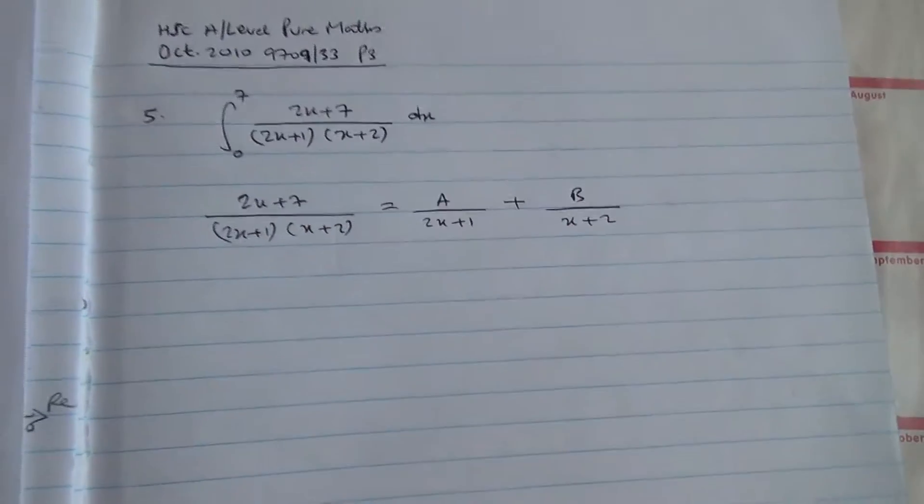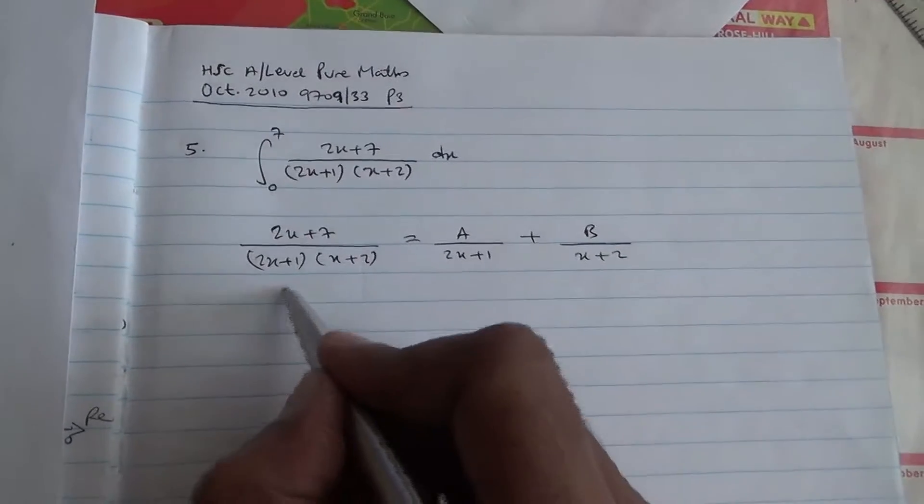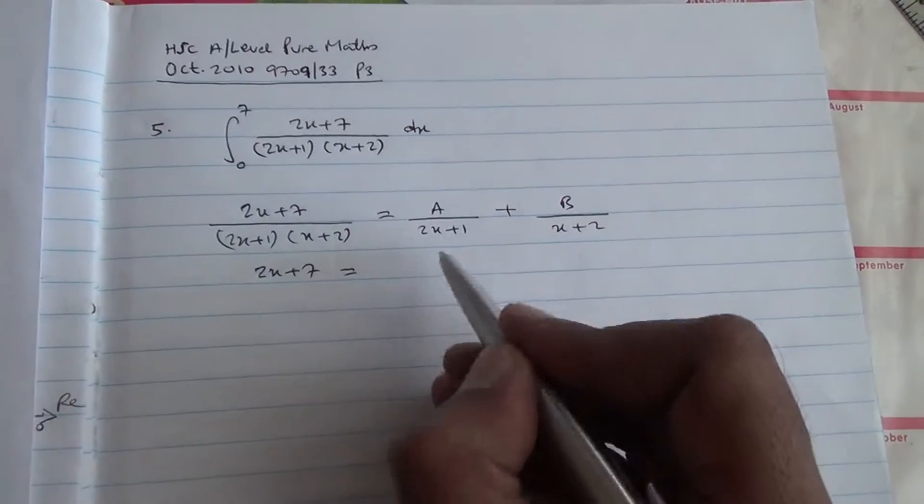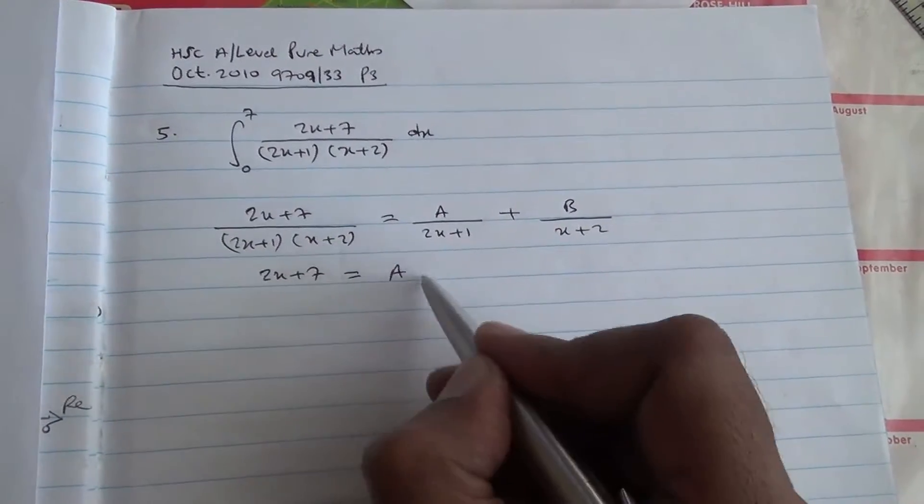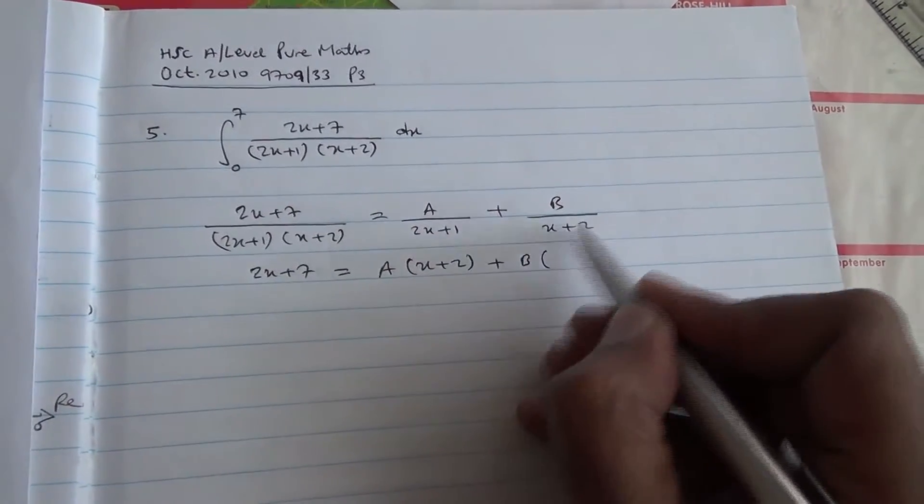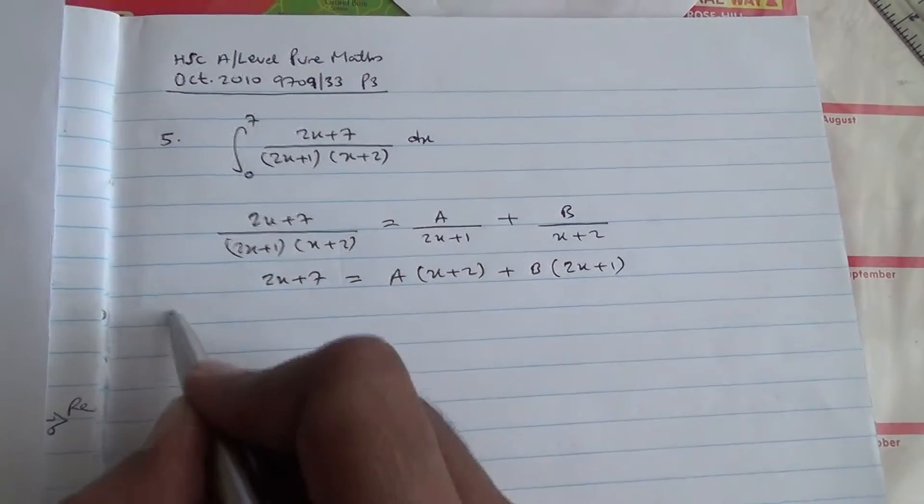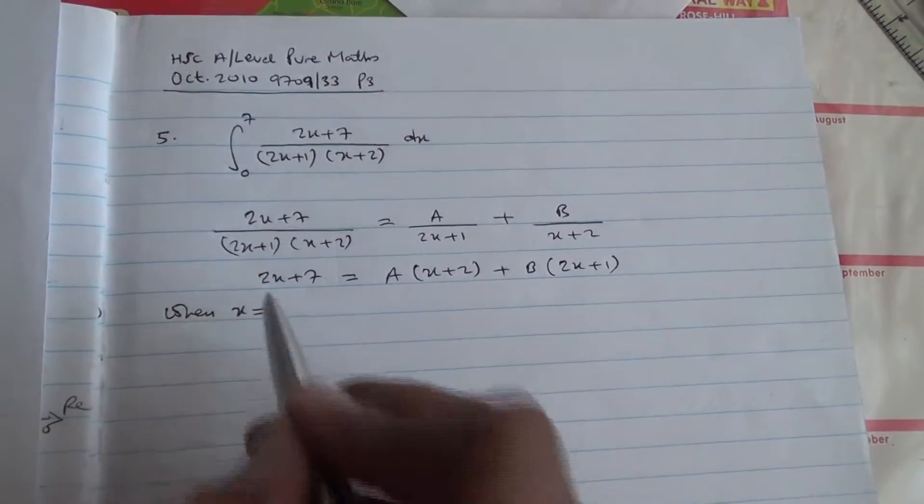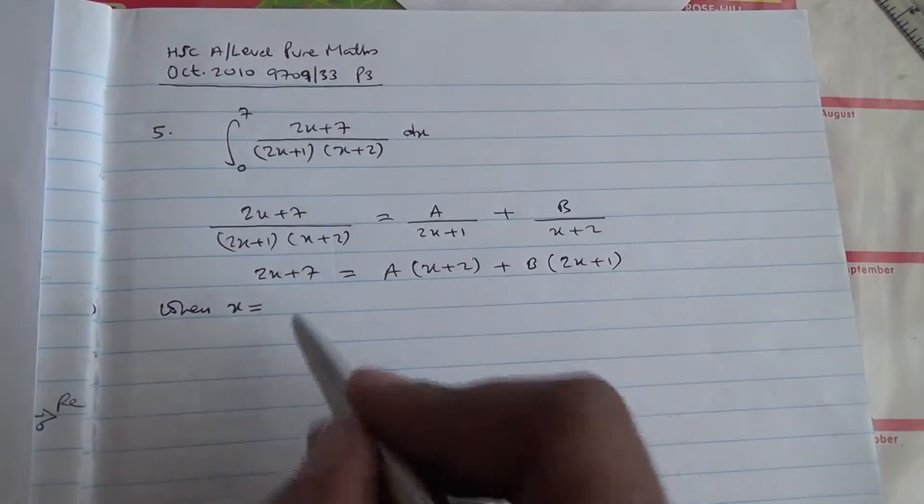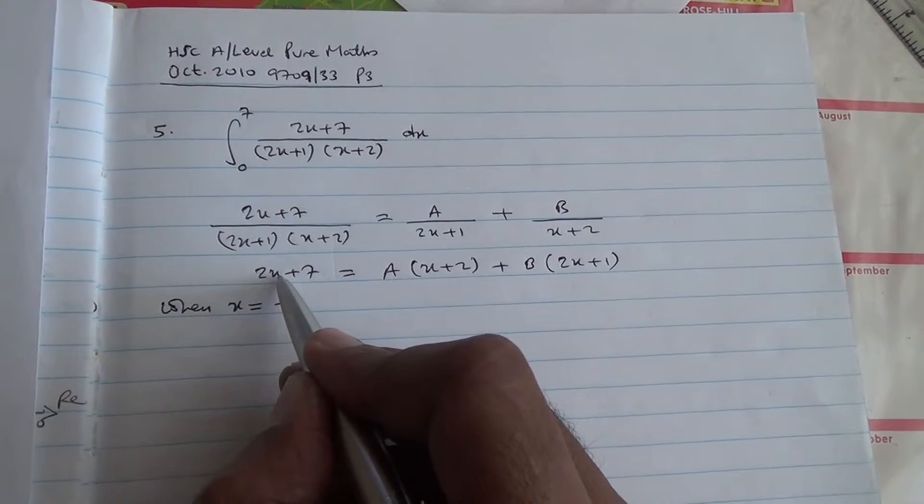Now we're going to put that in partial fraction and then we're going to integrate it. Therefore, 2x plus 7 is equal to, the 2x plus 1 goes out, so we got a times x plus 2, then plus b times, x plus 2 goes out, I got 2x plus 1. So now when x is equal to, this is x plus 2, therefore outside x is going to be minus 2. So when x is going to be minus 2, we put minus 2 here, minus 2 times 2 is minus 4, plus 7 is 3.